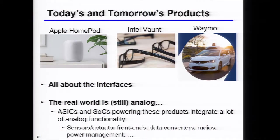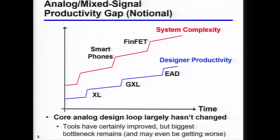As long as the real world is analog, all the ASICs and SOCs embedded in current and future products are going to have substantial analog mixed-signal content — whether that's sensor and actuator front ends, data converters getting things into the digital domain, radios, or power management. All of these things are fundamentally analog problems at their heart. Given the goal of dropping NRE by a factor of two every year, if we do nothing on the analog side, it becomes the bottleneck within an iteration or two of that scaling.